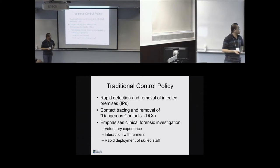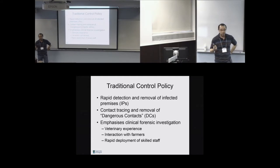So the traditional control policy is rapid detection and removal of infected premises. Basically, people go out, they go and look for these premises, they contact trace, and you basically slaughter the animals as quickly as you possibly can. And this is the method that was used in Britain over the previous century, and very successfully, really, in the end, managed to get rid of the disease. So very few outbreaks, for example, between 1967 and 2001. One outbreak, and that was an aerosol spread from France, actually, from Brittany across to the Isle of Wight. So the emphasis is on veterinary experience, the interaction with the farmers, and the fact that you've got a large cadre of skilled staff to actually do this.